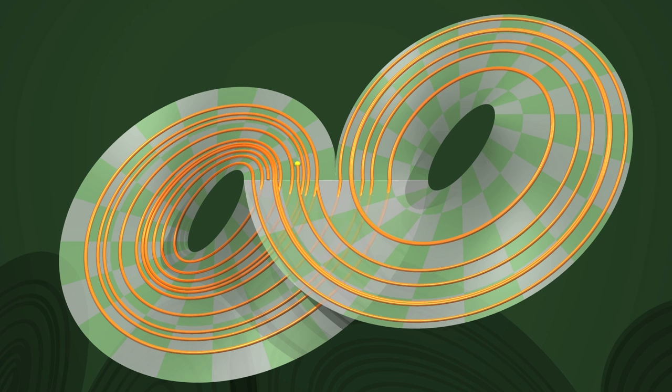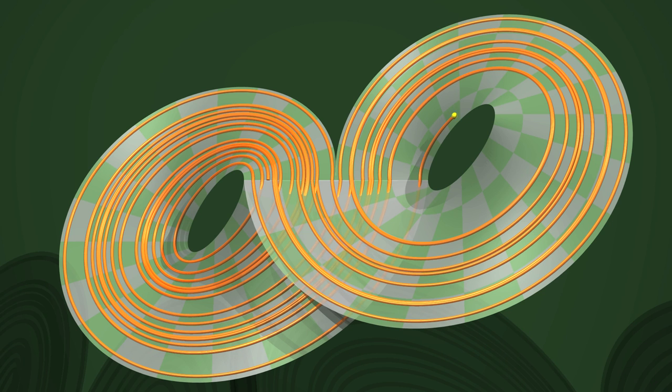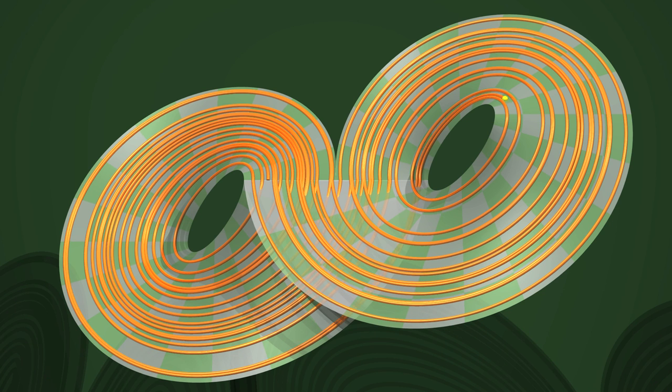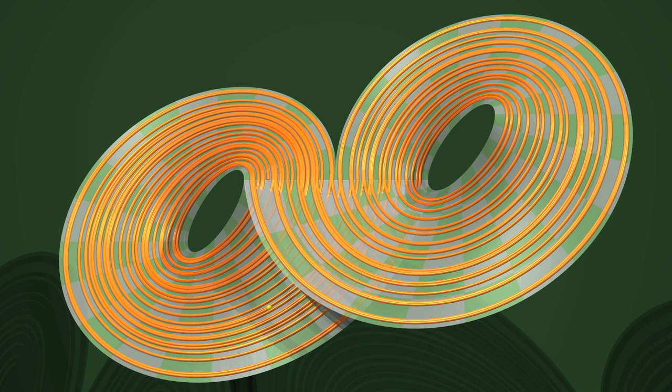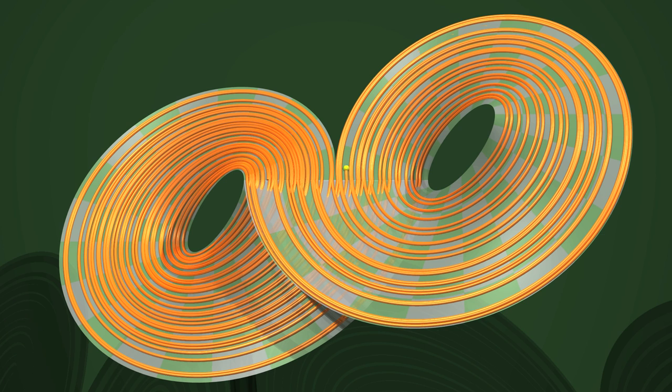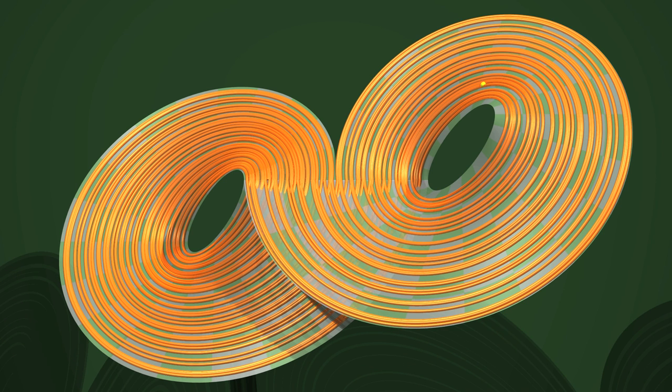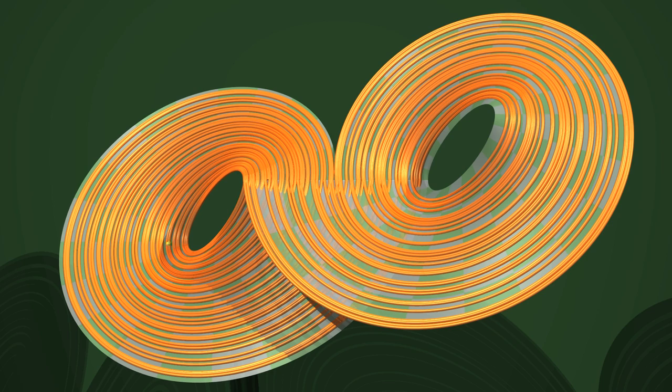What is the relationship between the Lorenz attractor and the model made of strips of paper? Well, it wasn't until 2001 that the mathematician Tucker showed that the paper model accurately describes the movement on the Lorenz attractor.